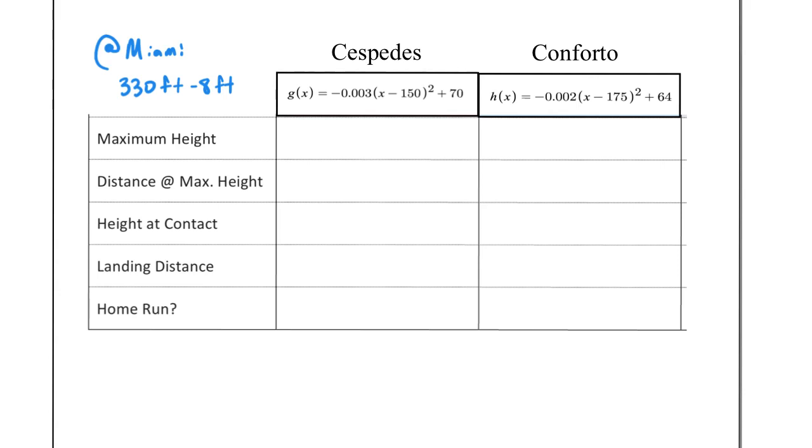Because these functions are given in vertex form, some of these we can fill in relatively easily. Vertex form, we know the vertex is clearly visible just by looking at the function itself. If I'm looking at Cespedes, that minus 150 in the parentheses, if we apply our IHOP rule, that tells me the vertex is at positive 150 for the x-value and the y-value is at 70. So 150 in this case is going to represent the distance at the maximum height, and the 70 is going to represent the maximum height.